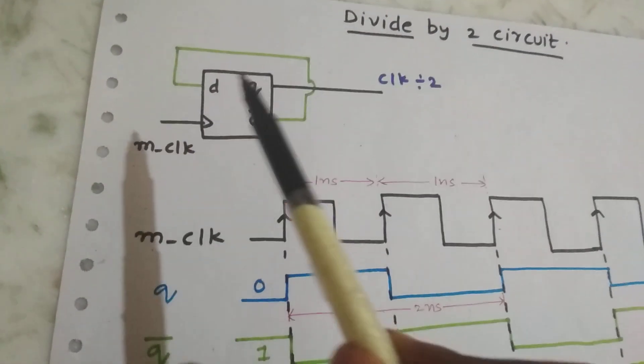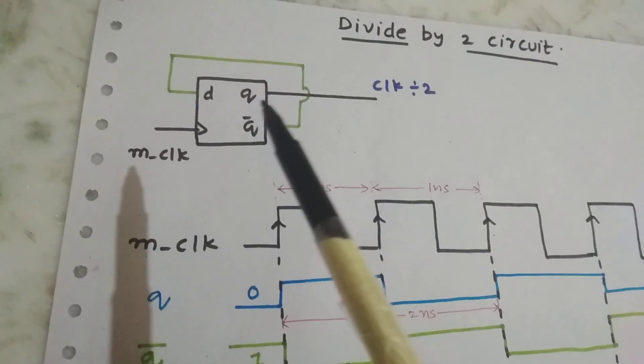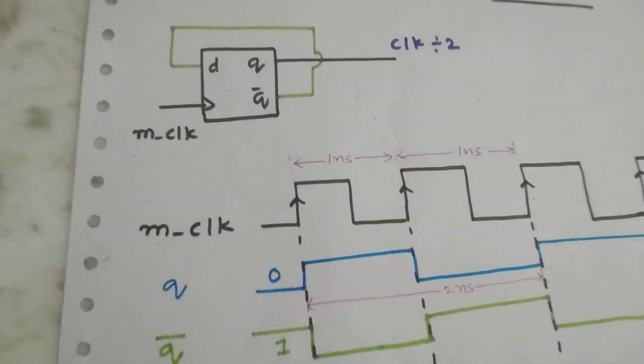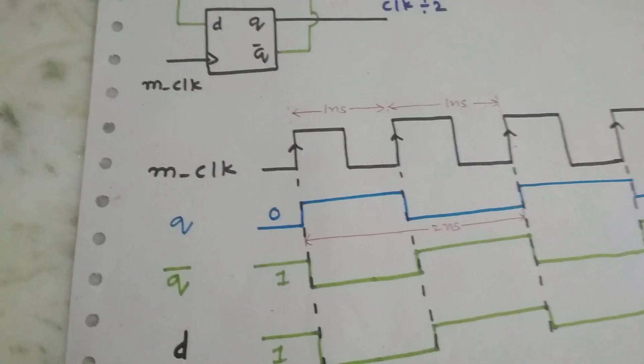Clearly from these waveforms we can say that time period is doubled and frequency is divided by 2. And this is the circuitry which is used for getting the frequency divided by 2. I hope you have understood this concept of frequency divided by 2.